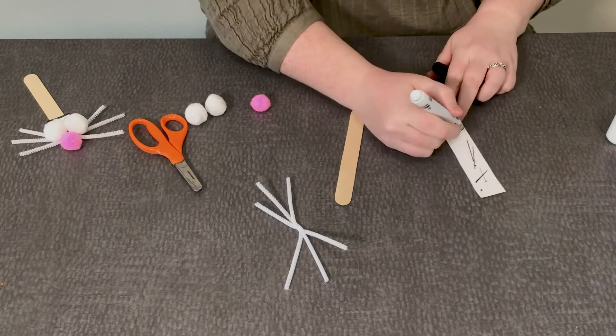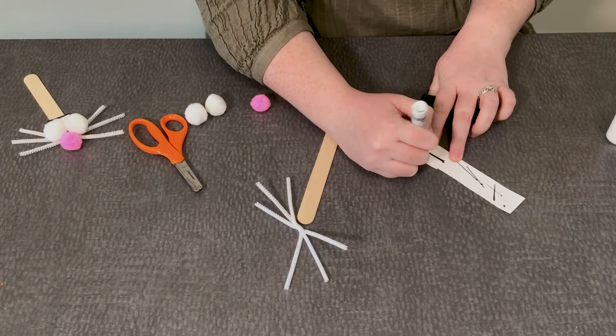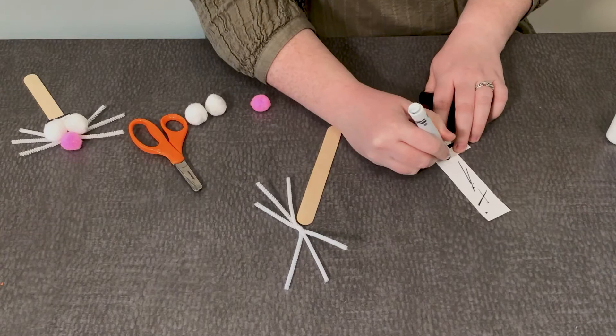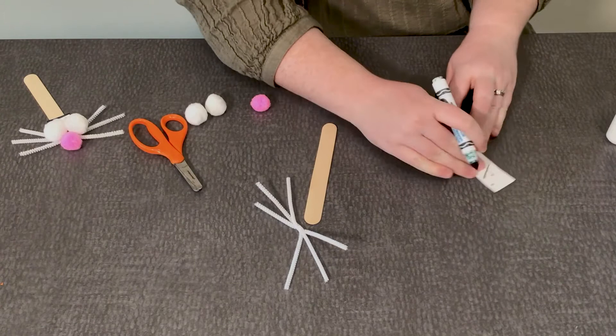We're going to make a line down the middle so we can have two teeth, and then I'm going to outline the outside of it so we can see it better when we put it all together.